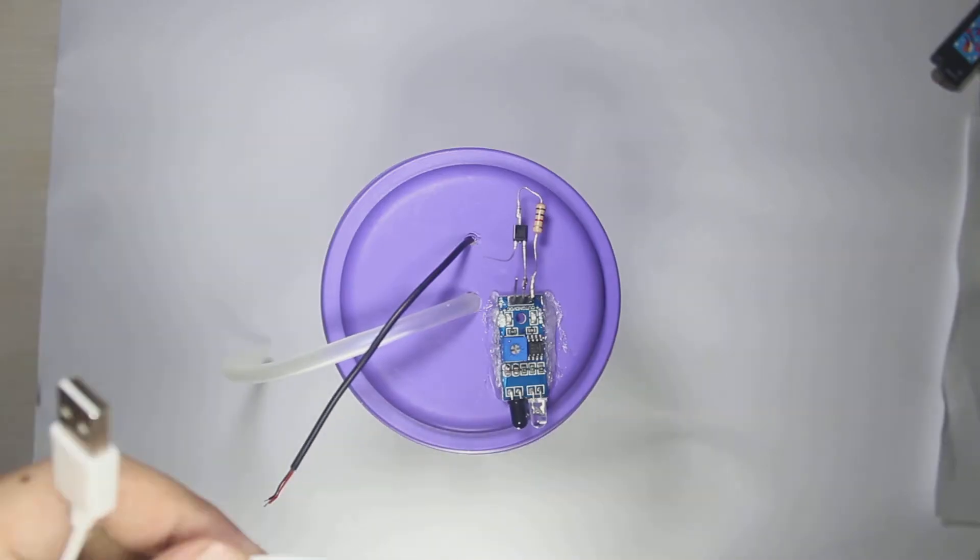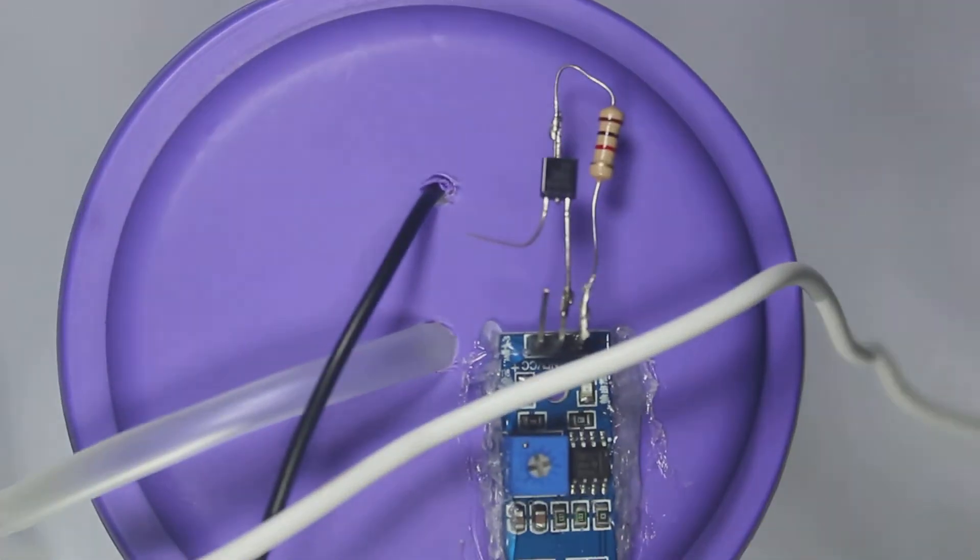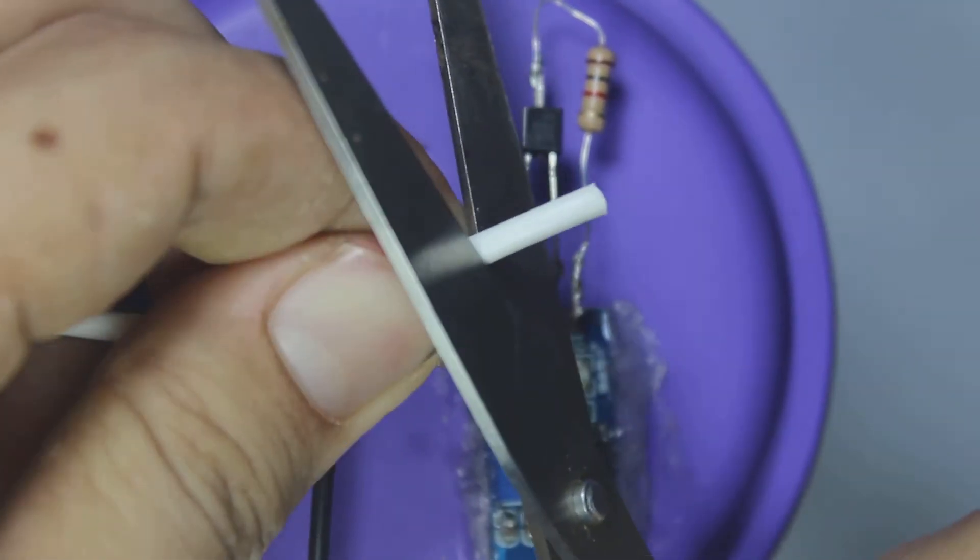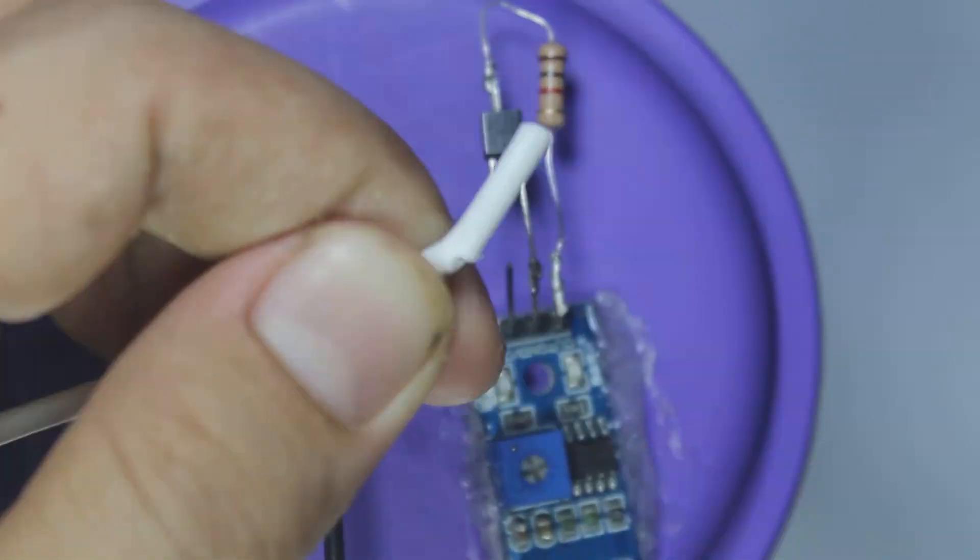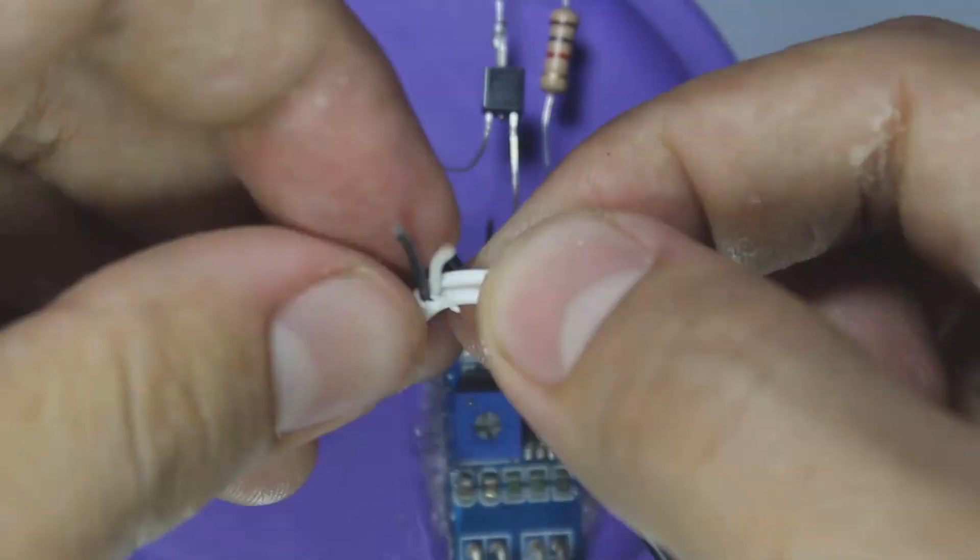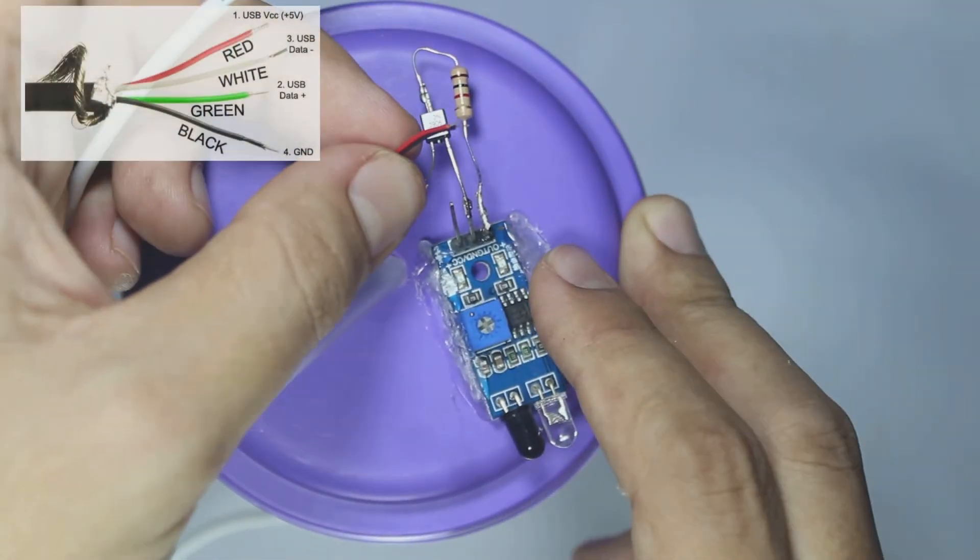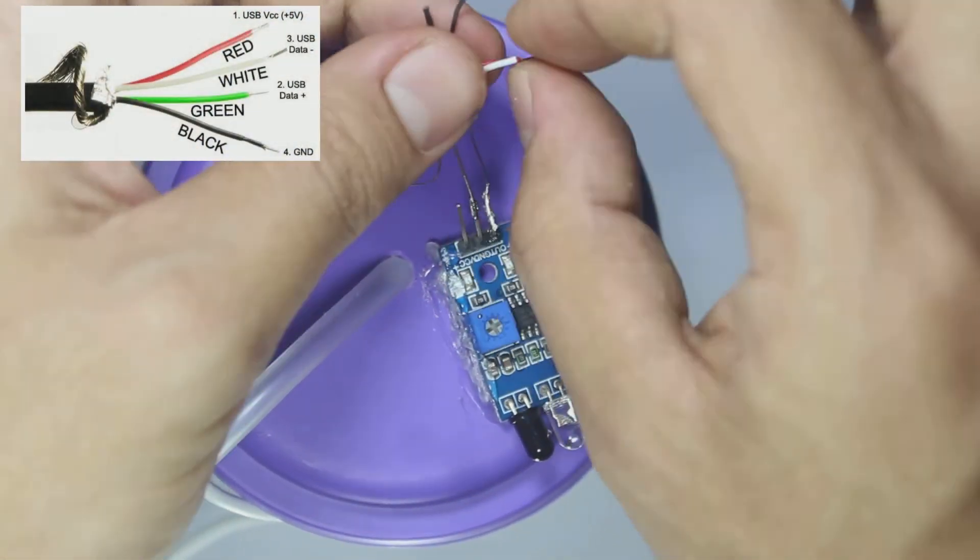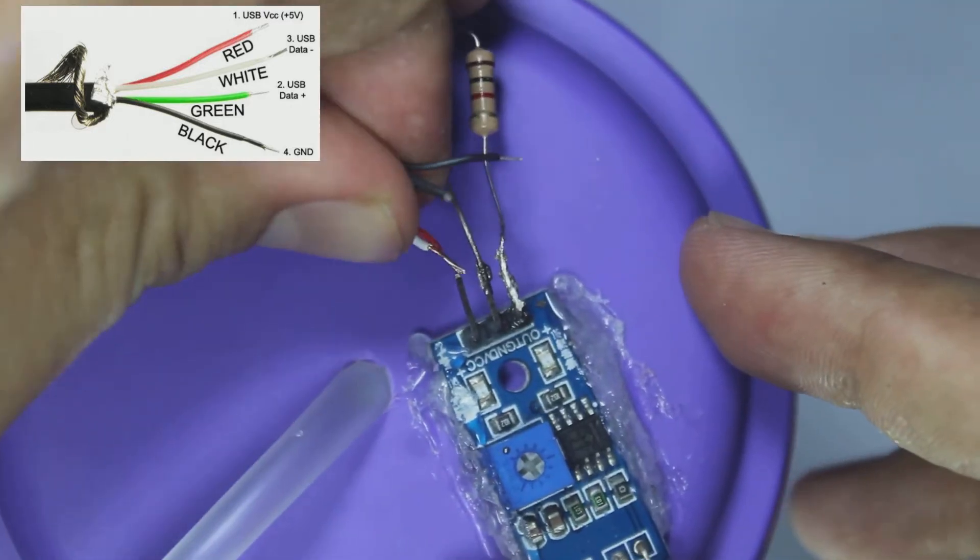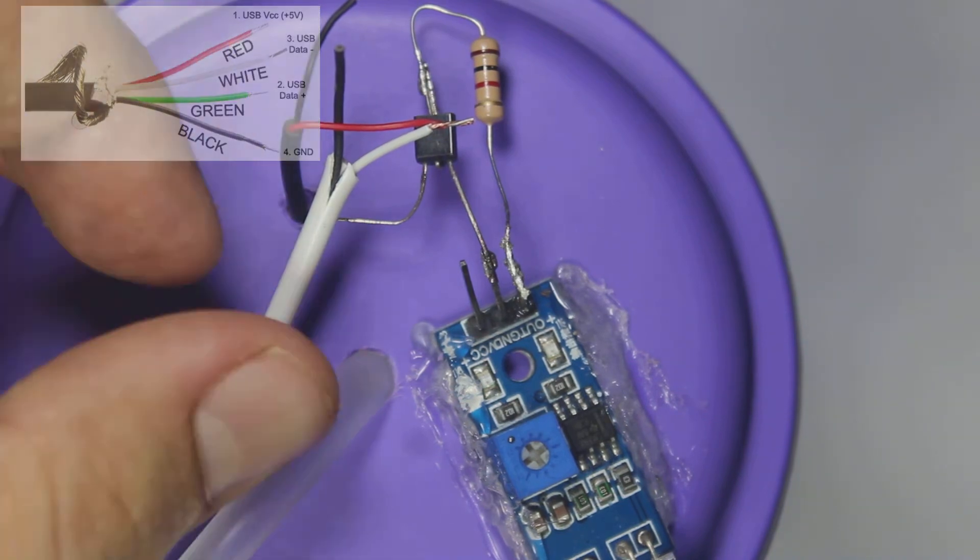Now we can continue the soldering process. Take out the wires from USB cable. The white cable is positive and the black cable is ground. If your USB cable has red wire color, it's the positive, and black is always the ground. And if your USB cable has four wires inside, don't worry, just ignore the two other cables because they're for data. Always use the positive and ground only.